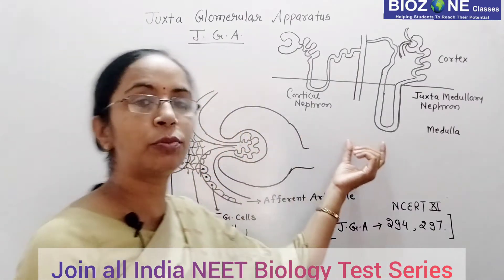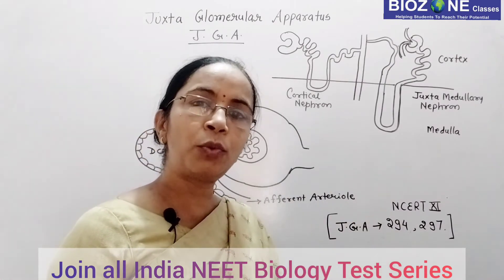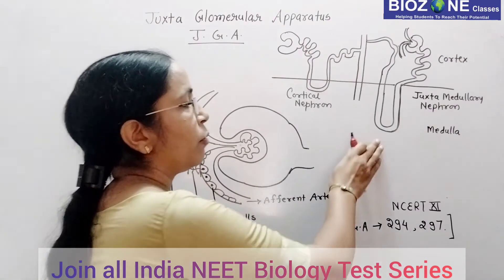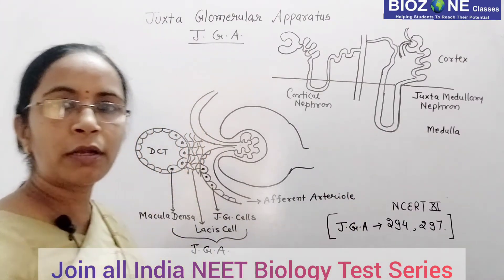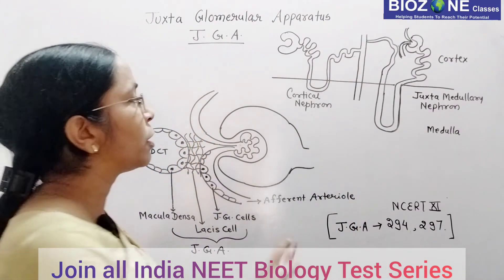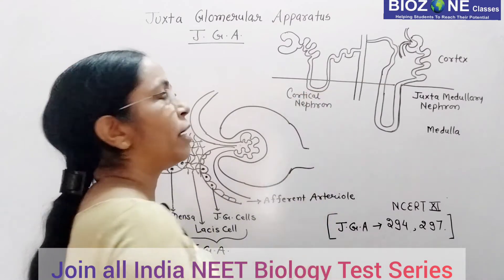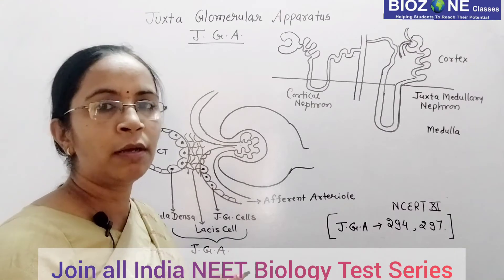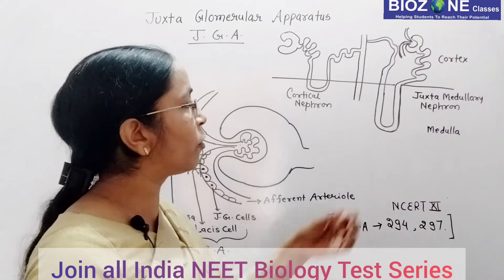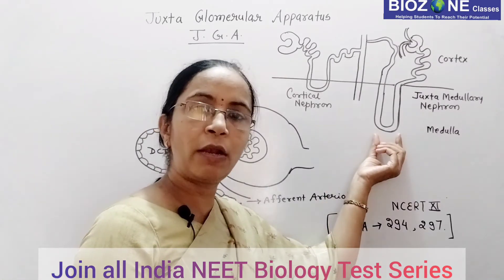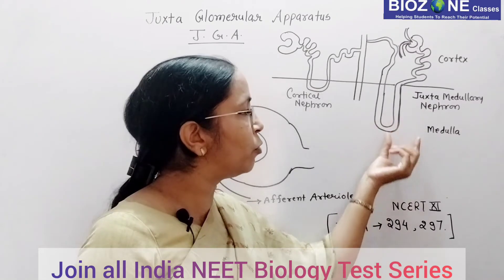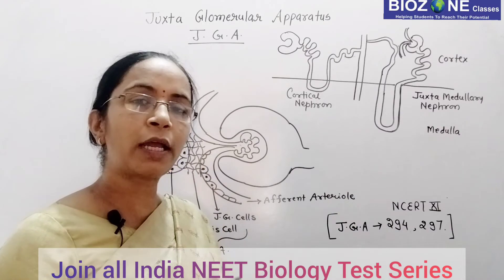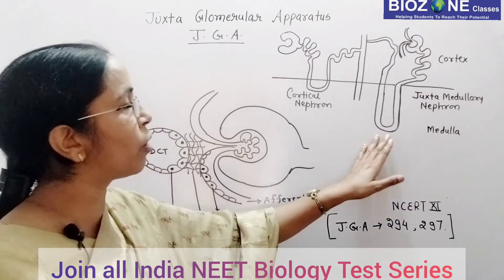Generally, when we come to nephrons, there are two types: cortical nephron and juxtamedullary nephron. In cortical nephron, the Henle's loop is very short and the entire nephron is located in the cortex region. But in juxtamedullary nephron, the Henle's loop is very long and this long loop enters the medulla, making the medullary interstitium available to the long Henle's loop.